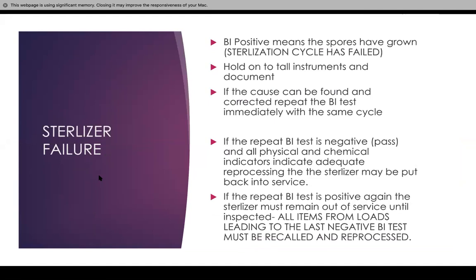If there is a sterilizer failure — a biological indicator that is positive means the spores have grown. If the biological indicator placed in the PCD shows a color change after being placed in the incubation device for 24 hours, that means your sterilization cycle has failed. You have to hold all instruments and document that it has failed, that you have held them, and that you have not released them.